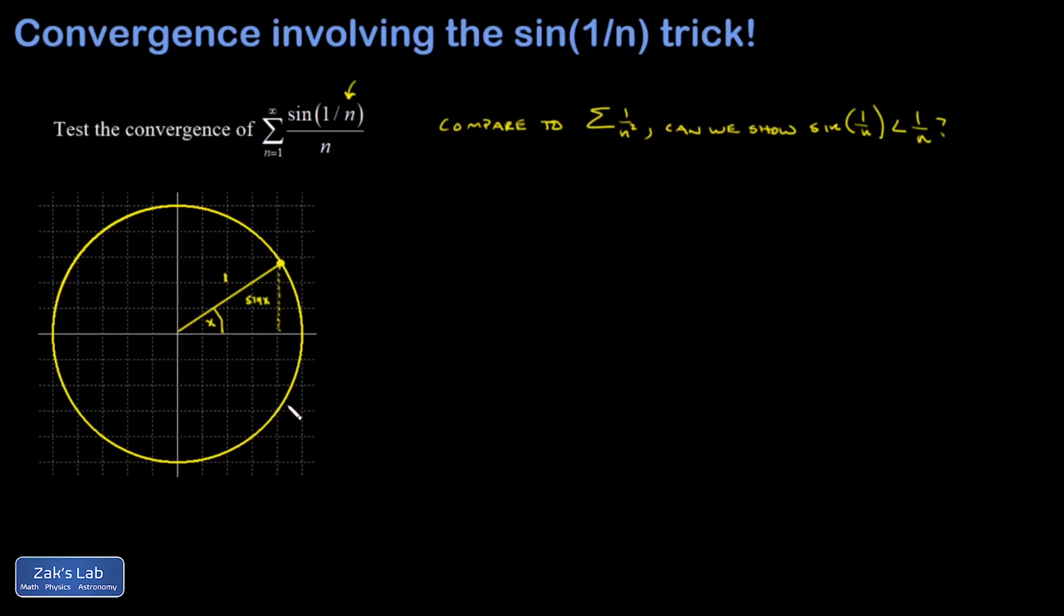All right, but then I can apply an old formula from geometry, s equals r theta, and talk about the length of this arc right here. So s equals r theta. So the length of that arc is going to be radius times the angle, which was just x. In other words, it's just x.